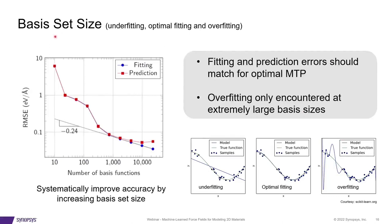Users can choose the number of basis functions to train a moment tensor potential, but a wrong choice leads to overfitting or underfitting — two outcomes to avoid. Along the y-axis of the graph is the root mean square error of the trained MTP with respect to DFT data, and along the x-axis is the number of basis functions used. There are two data sets: one for fitting and another for prediction. The optimal number of basis functions depends on the system's complexity — a small number suffices for simple systems like molecules, while complex systems like amorphous configurations or polymers may require a larger number. For small basis sets, both fitting and prediction errors are large — the classical case of underfitting, where the model is very simplistic and completely off compared to the underlying data.